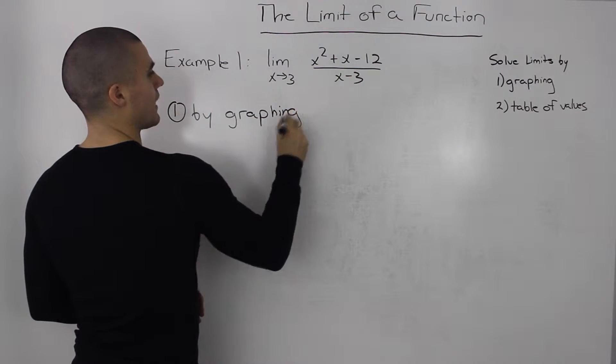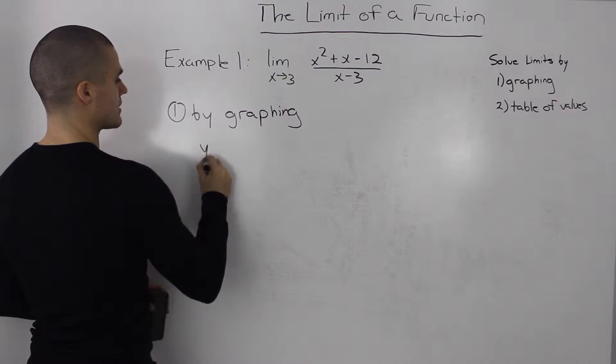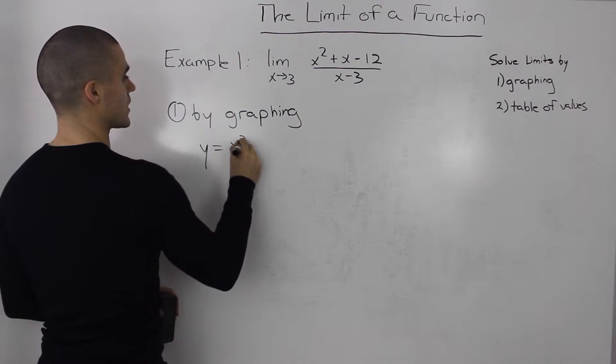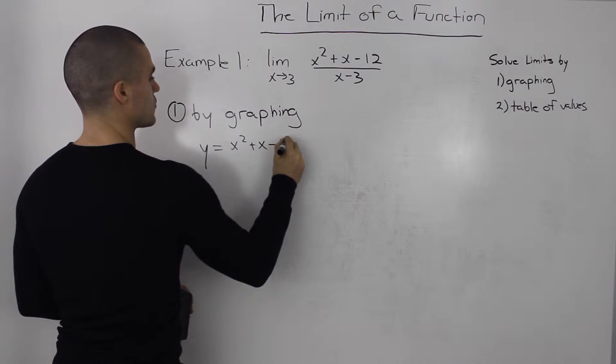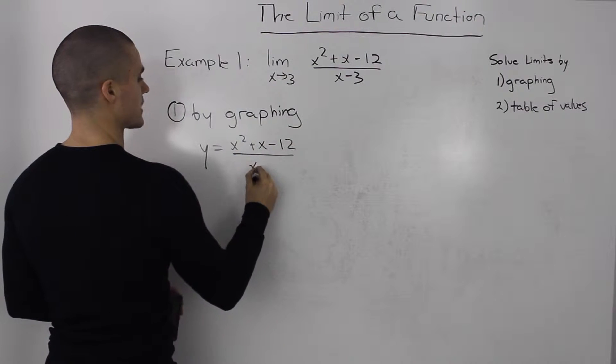We'll have to graph this function here. So y equals x squared plus x minus twelve over x minus three.